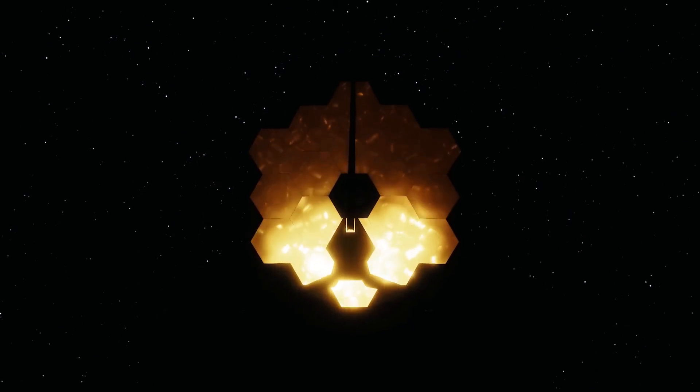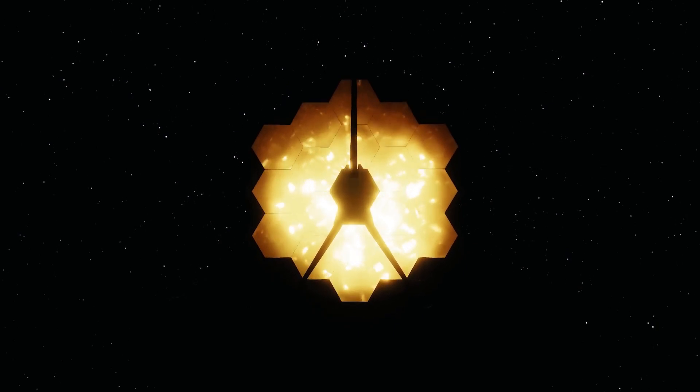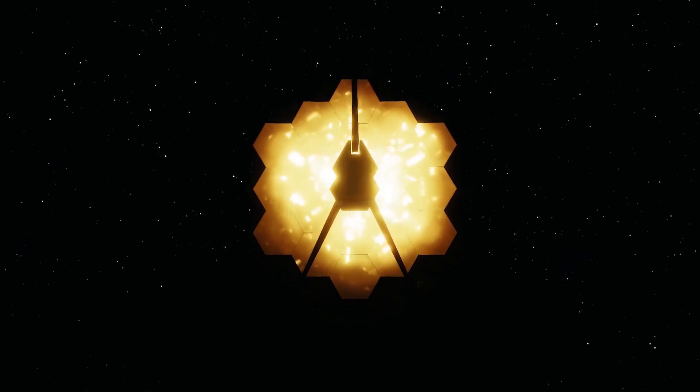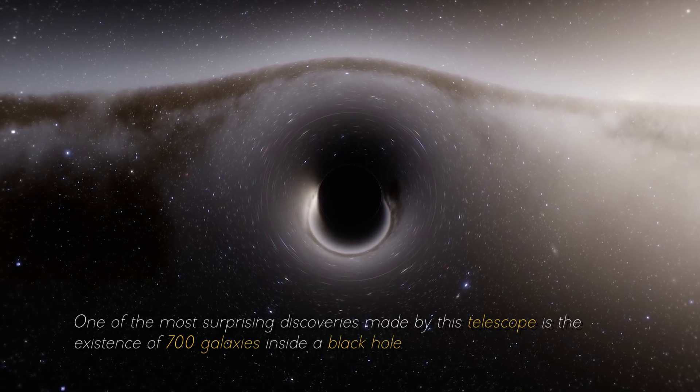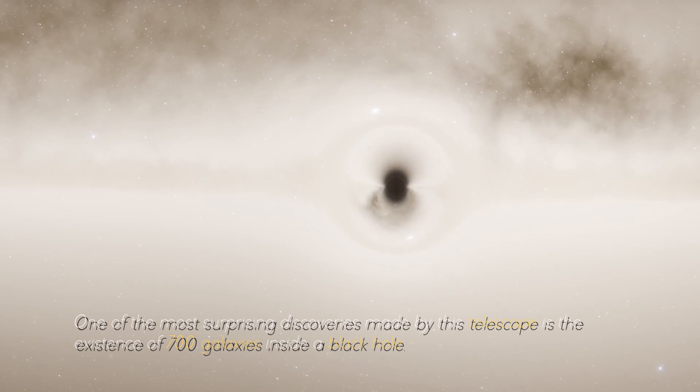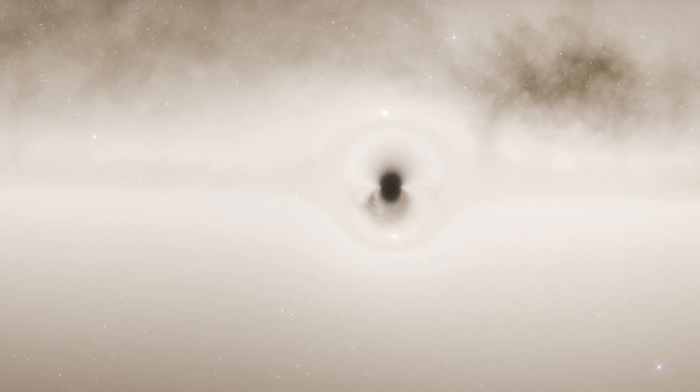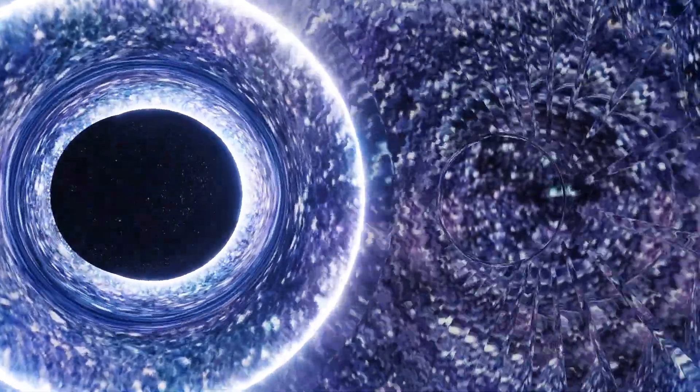However, the James Webb Space Telescope has the ability to observe beyond what any other technology has yet achieved. One of the most surprising discoveries made by this telescope is the existence of 700 galaxies inside a black hole. This finding defies the conventional understanding of how black holes work.